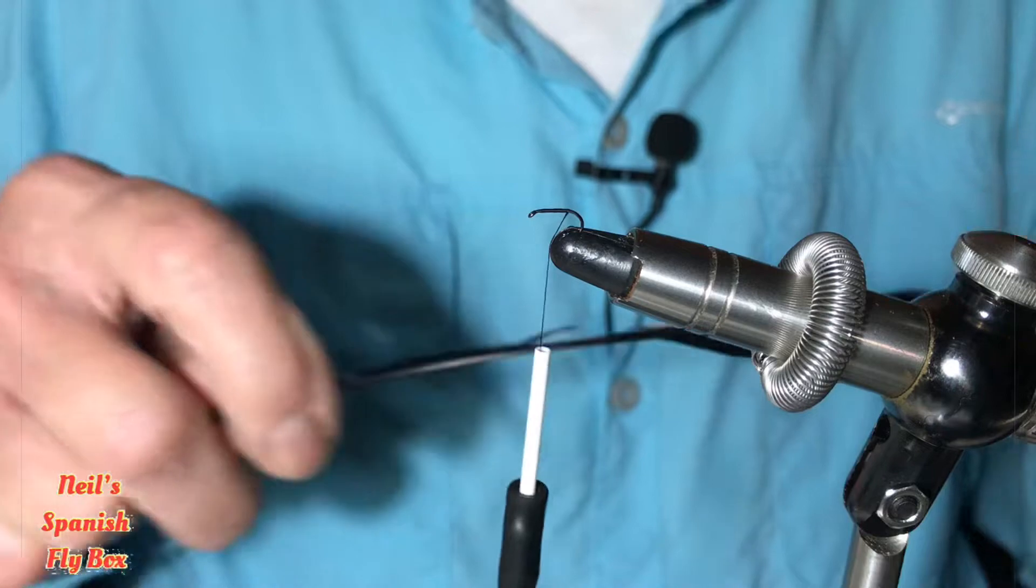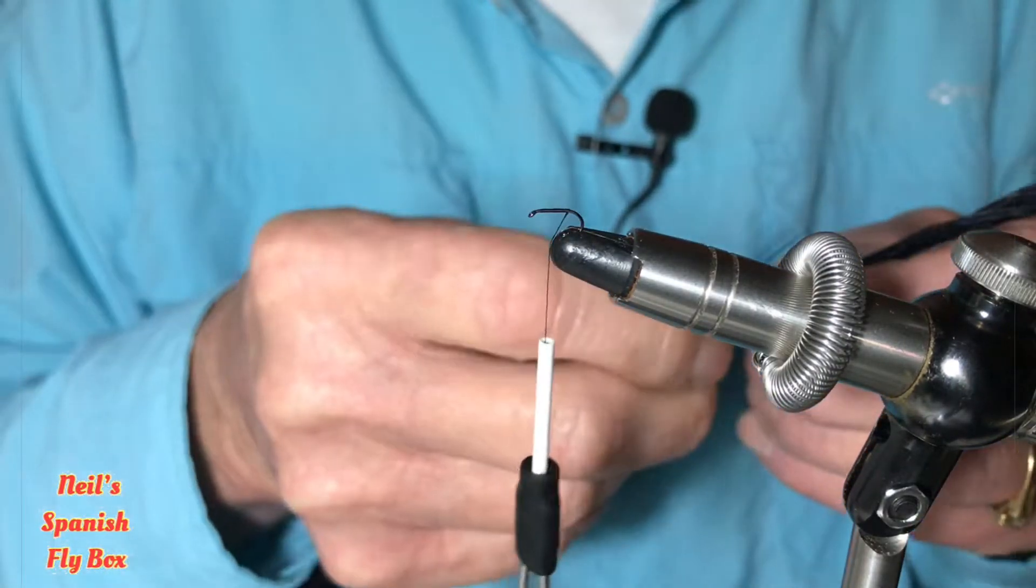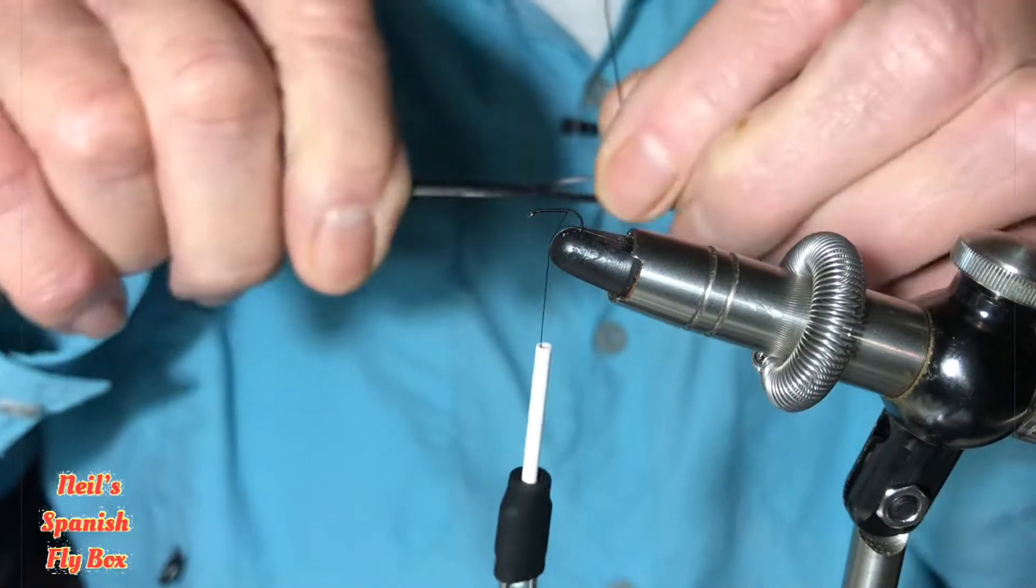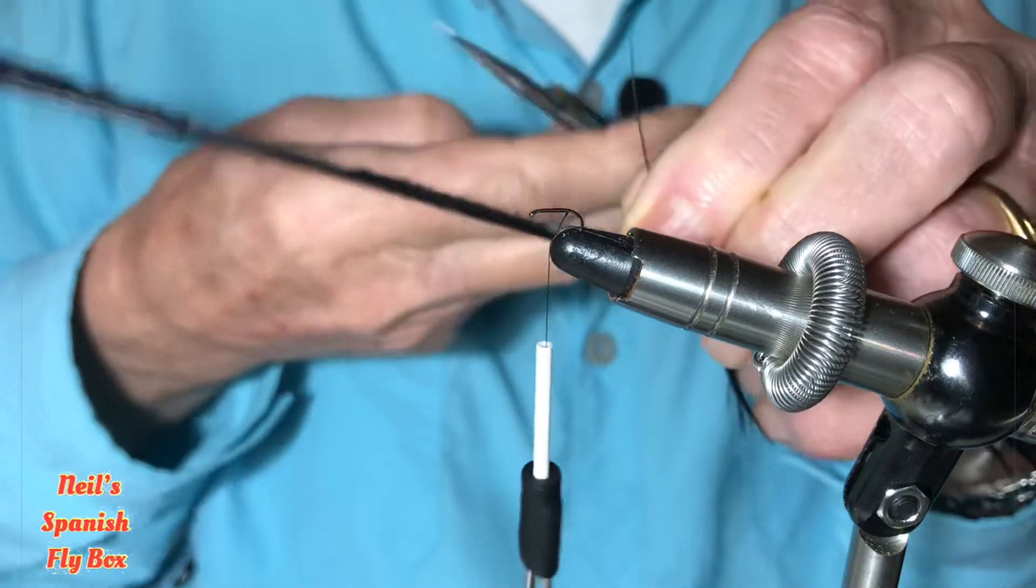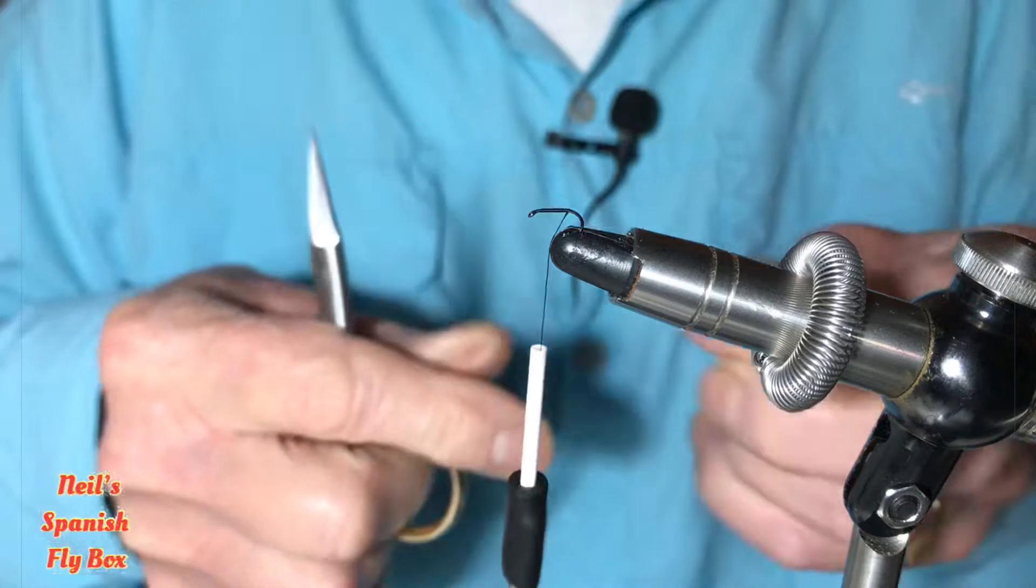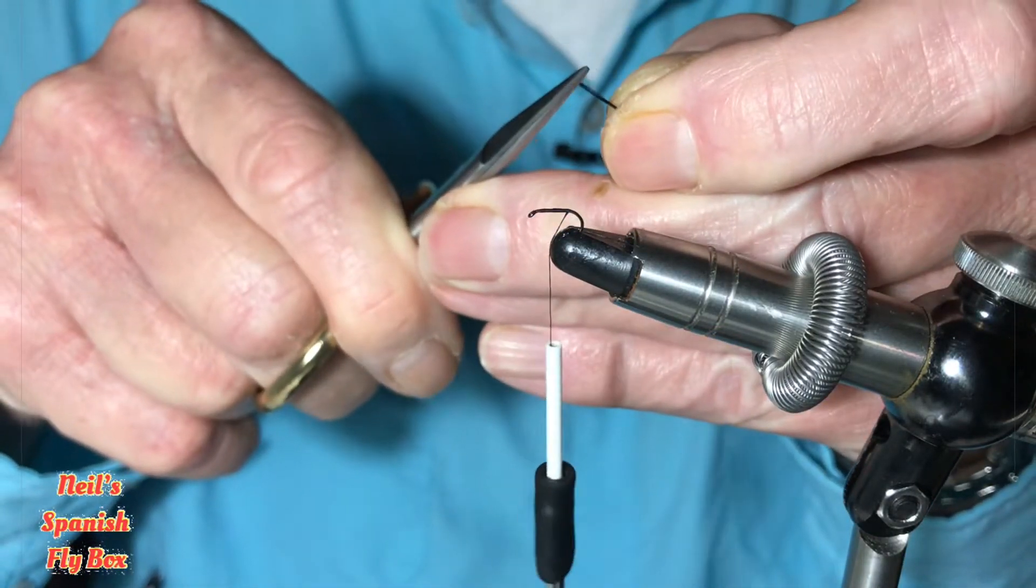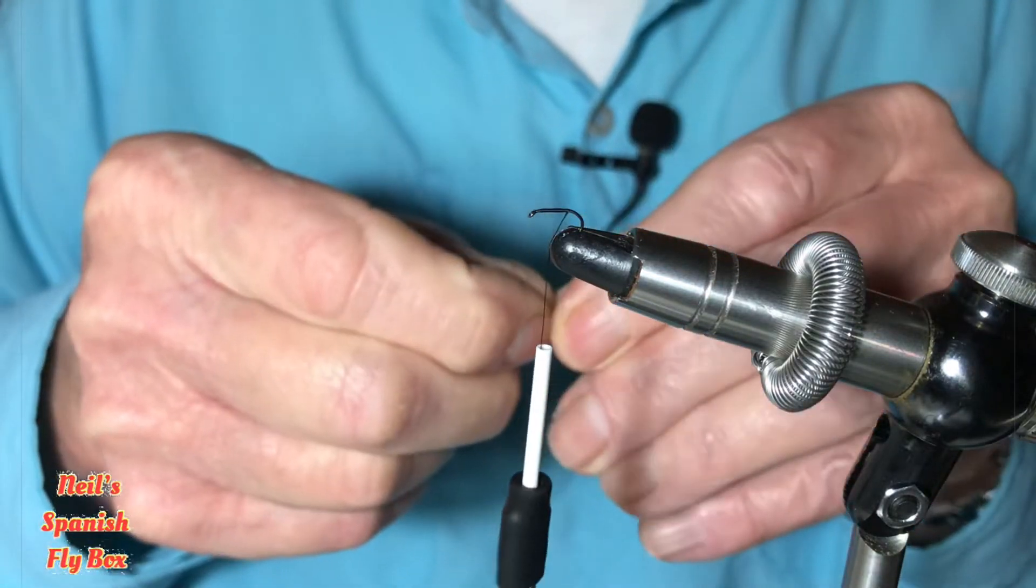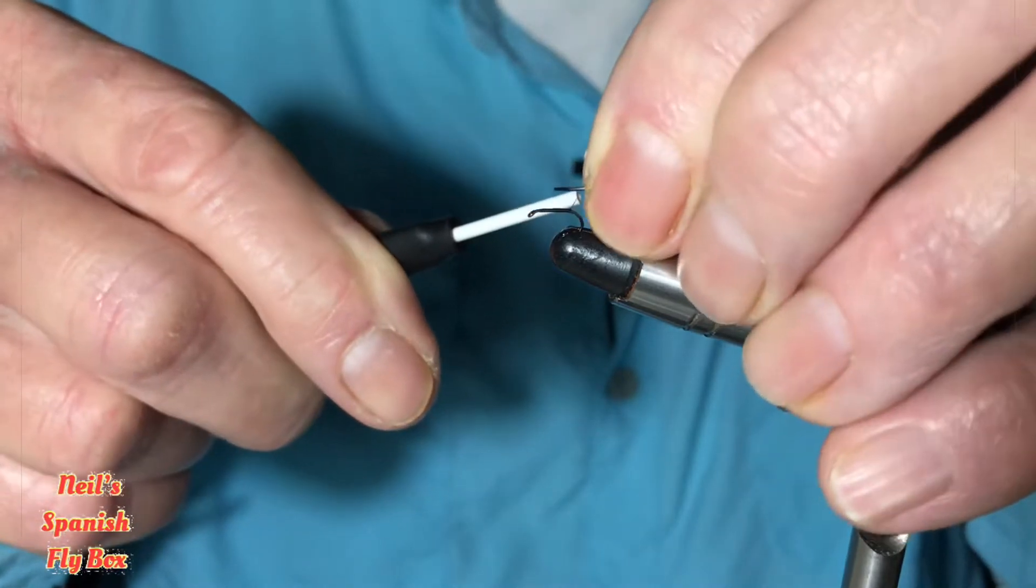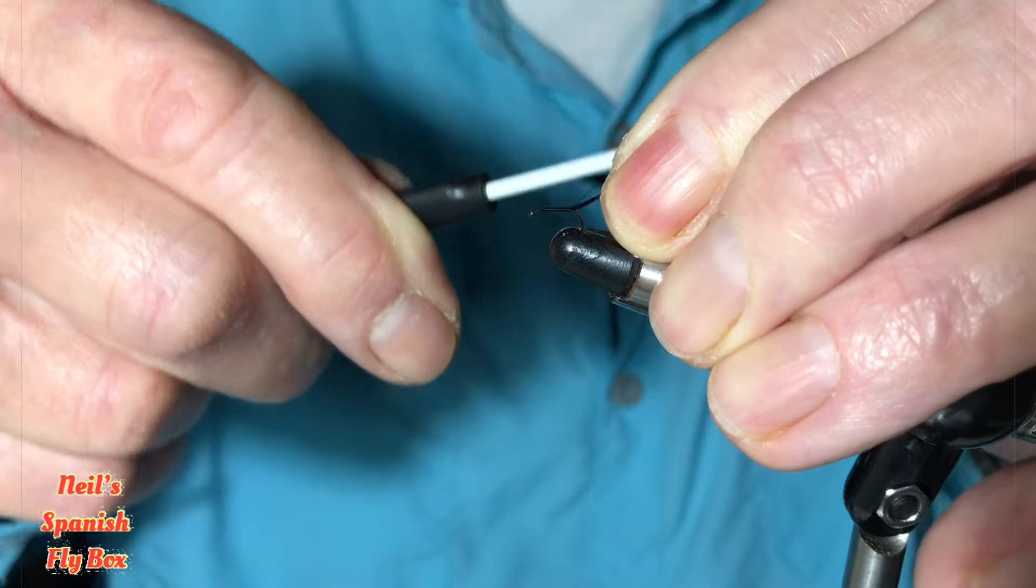Now the body is going to be black pheasant tail, and in this instance it is just one piece of hole, just one fiber for the body. I'm just going to trim up that end. I'm going to tie this in with the thick end first, which is quite unusual. We don't normally do that. We normally do it with a thin end, but doing it with a thick end.